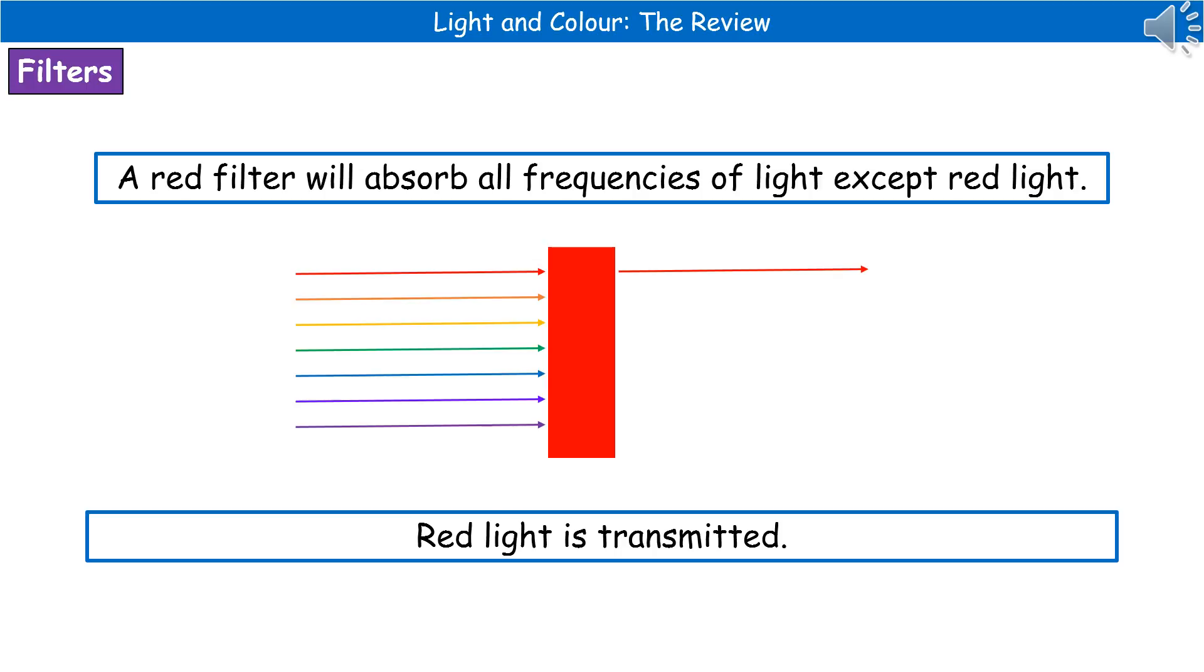What will happen as that light hits our red filter, all of the frequencies of light will be absorbed except for the red light. The red light is transmitted through. So on the other side of that filter, what we see is red.